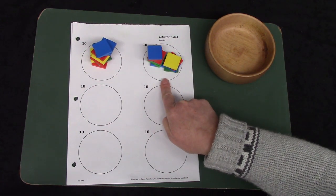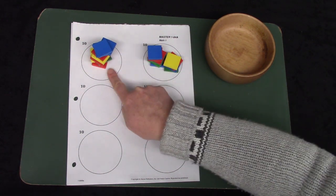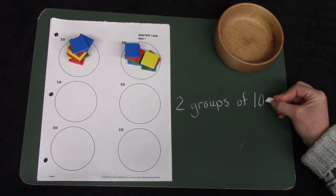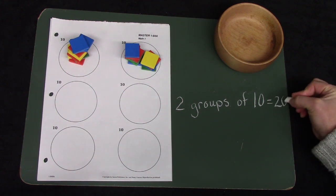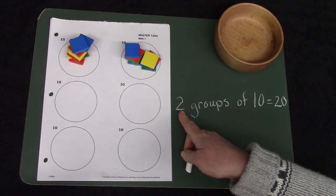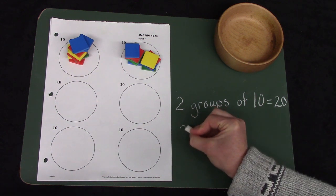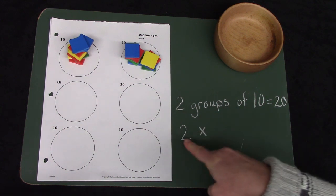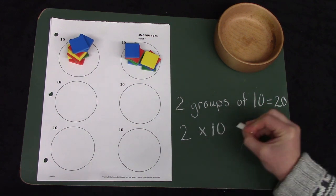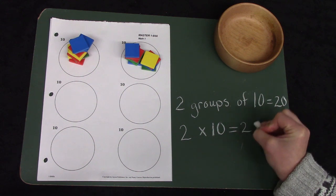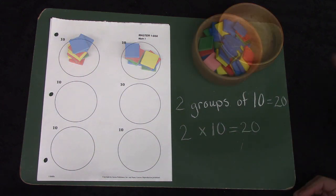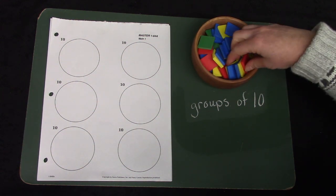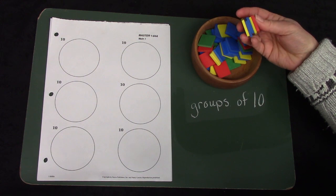In this bowl I had two groups of ten: ten, twenty. Two groups of ten equals twenty. If we were to write this in a number sentence, we would write 'groups of' with what looks like an x — two groups of ten equals twenty.